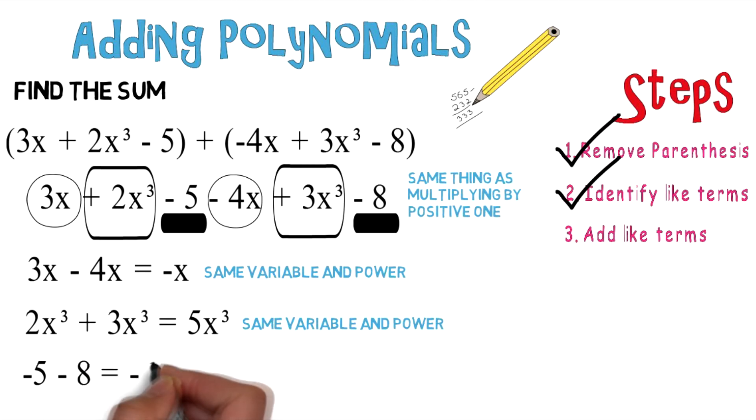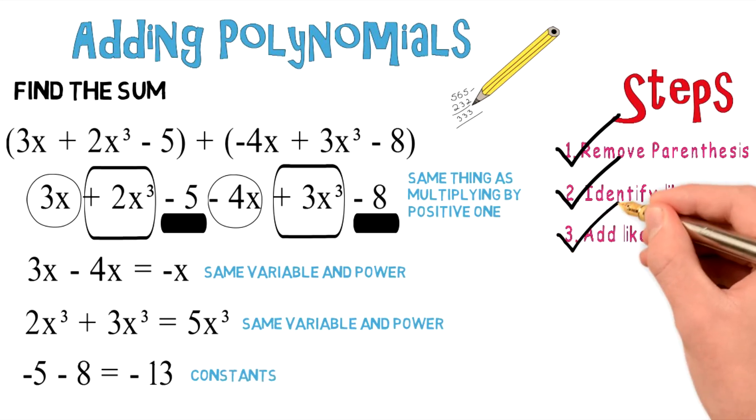And keep moving forward. You have a negative 5 and a negative 8, which will give you a negative 13. You're able to do that because they're both constants. And now we can check off step number 3. We've added like terms.